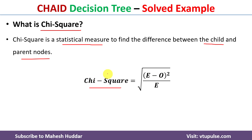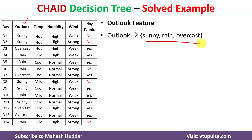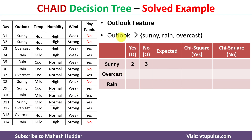We calculate the chi-square value for each attribute. The first attribute is Outlook, which has three possibilities: sunny, rain, and overcast. To calculate chi-square, we first need to know the observed and expected examples. For outlook equals sunny, we look at the outlook column — there are five places where sunny is present. Out of these five examples, two have 'yes' as the target and three have 'no'. This is the observed number of examples.